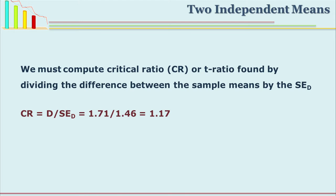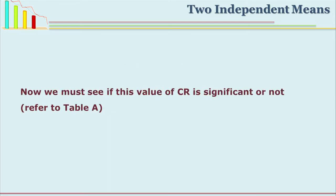What is the formula for critical ratio? CR equals the difference divided by the SE of difference — that is, M1 minus M2 divided by standard error of difference. We know the difference between two means is 1.71 and the SE of difference is 1.46. If you substitute the values, you get a critical ratio of 1.17. Now we must see whether this value of 1.17 is significant or not, because only if it is significant do we reject our null hypothesis.